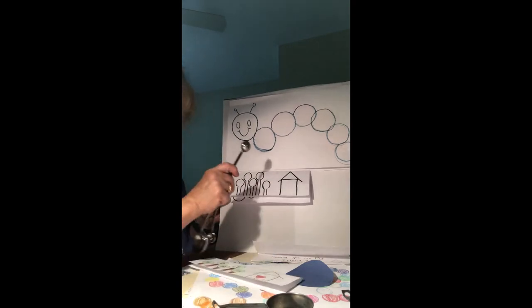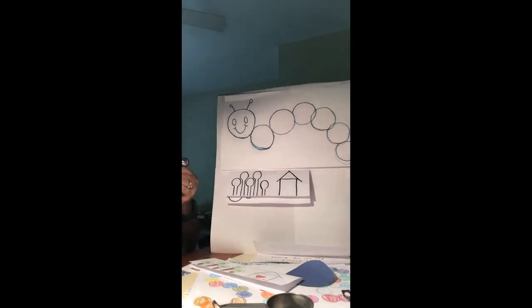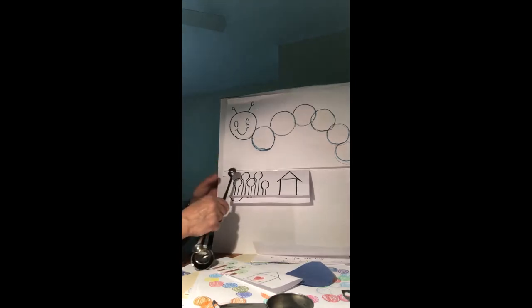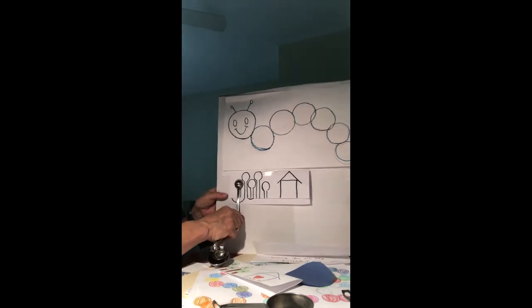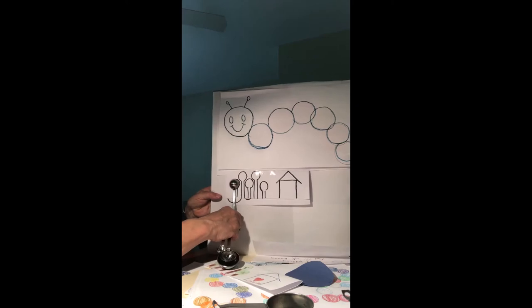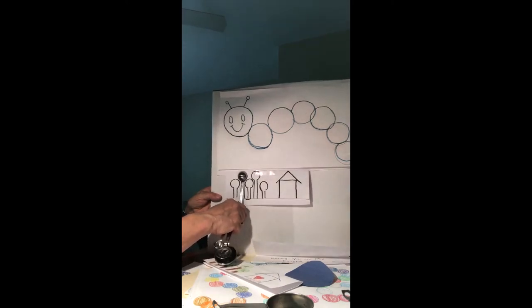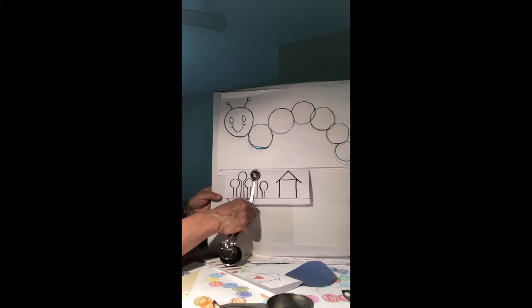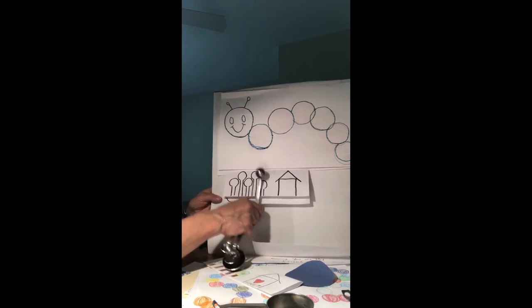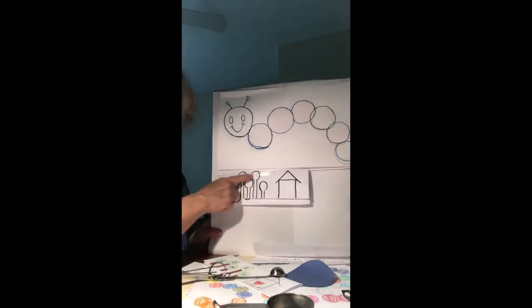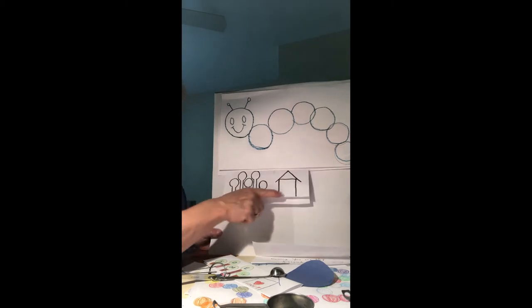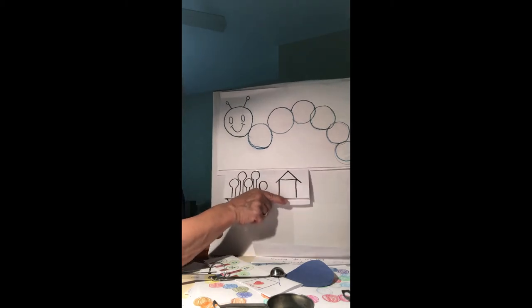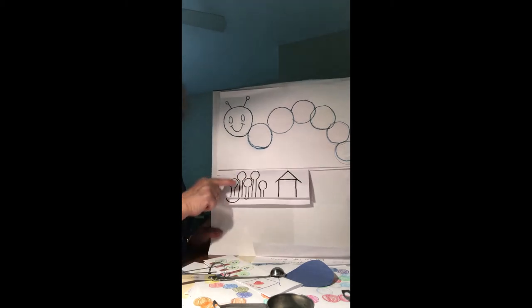I used the measuring spoons and I made lollipop trees. I used the spoon and traced around it just like this, the stem and the spoon part. I made them smaller and bigger and smaller, these made little lollipop trees. Then I took a square and put a triangle on top and I made a house over here.